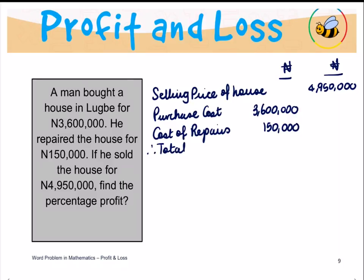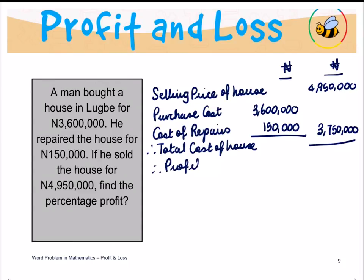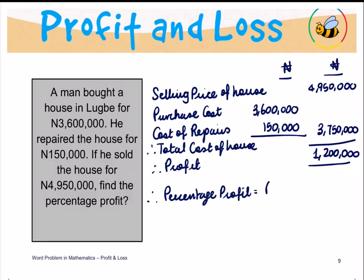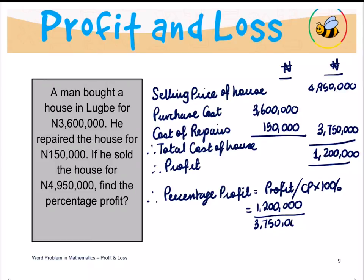It means that the total cost of the house, which is the sum of these two things, is 3,750,000. It means that the profit that he has made is exactly 1,200,000 naira. The percentage profit is always equal to the profit divided by the cost price times 100%. So let's do that. Profit is 1,200,000. Cost price, which is the total cost, is 3,750,000, times 100%.